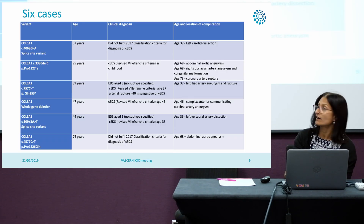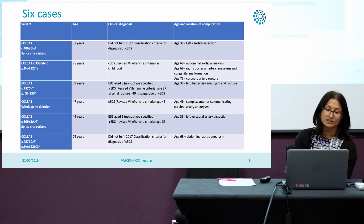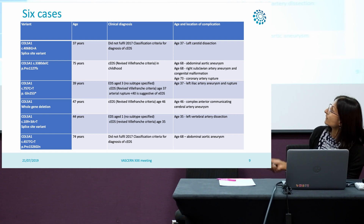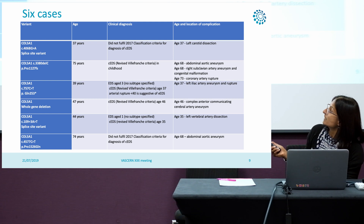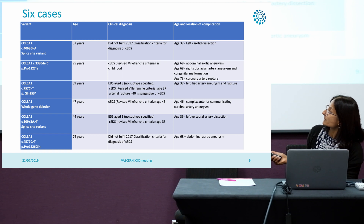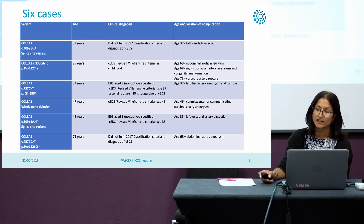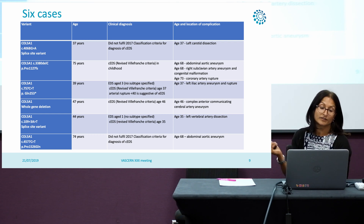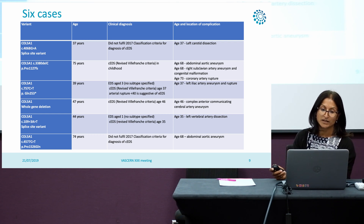This is a summary of our six cases. If you look at the variants, they're actually not in keeping with the previous literature described. You can see a different range of mutations: splice-site variants, a whole gene deletion, some loss of function, and one substitution. The other thing that's a little bit different is the age range — we've got a much older group of patients here, although the numbers are small, so it's difficult to comment on that.